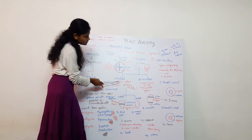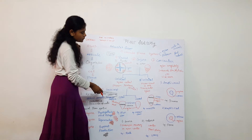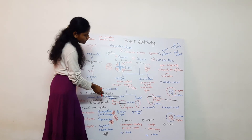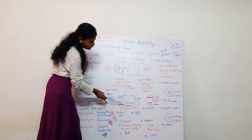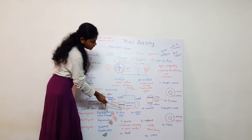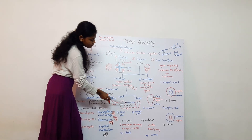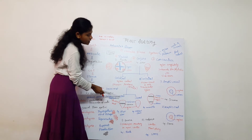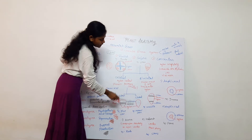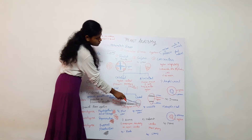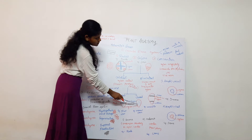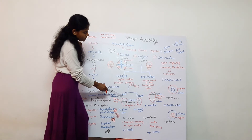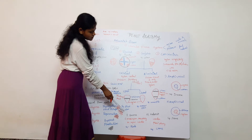In the collateral vascular bundle, there are two sub-types: open and closed. In the open type, a cambium is present between the xylem and phloem. In the closed type, cambium is absent. The open type of collateral bundle is found in the dicot stem.